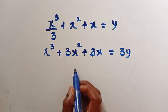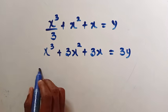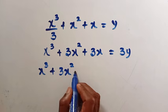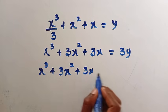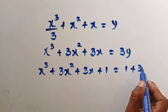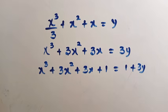And next, let's add one to both sides. We have x cubed plus 3x squared plus 3x plus 1 equals 1 plus 3y. And there is a reason to this.